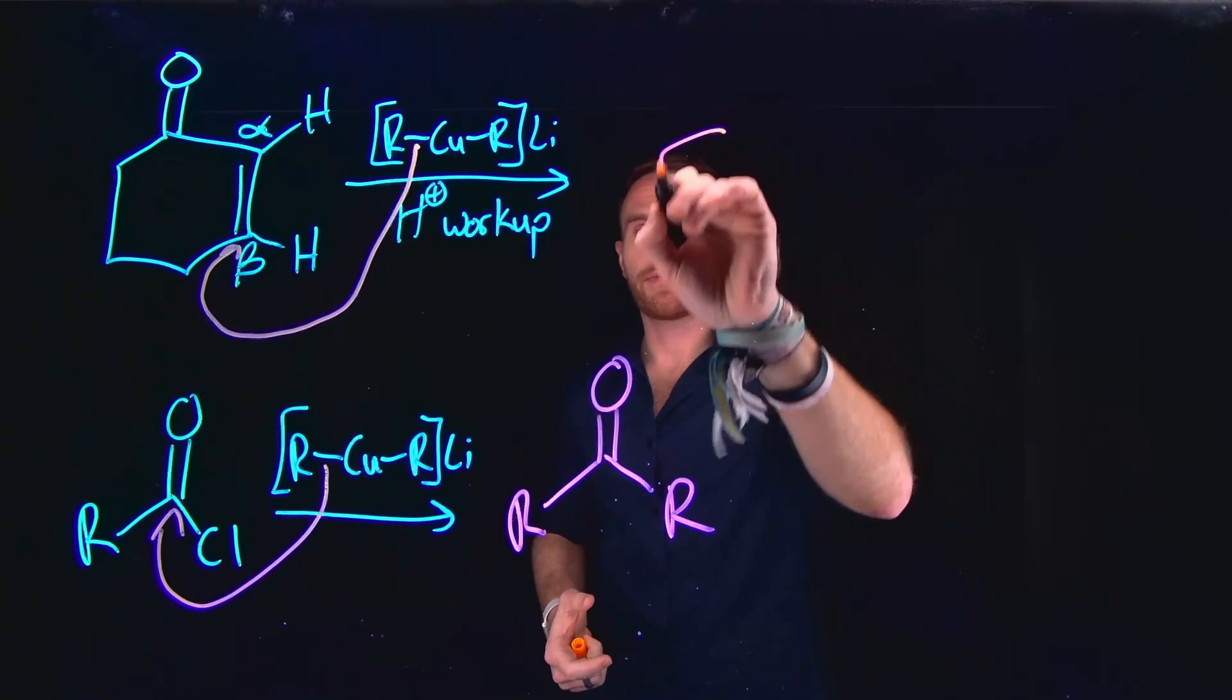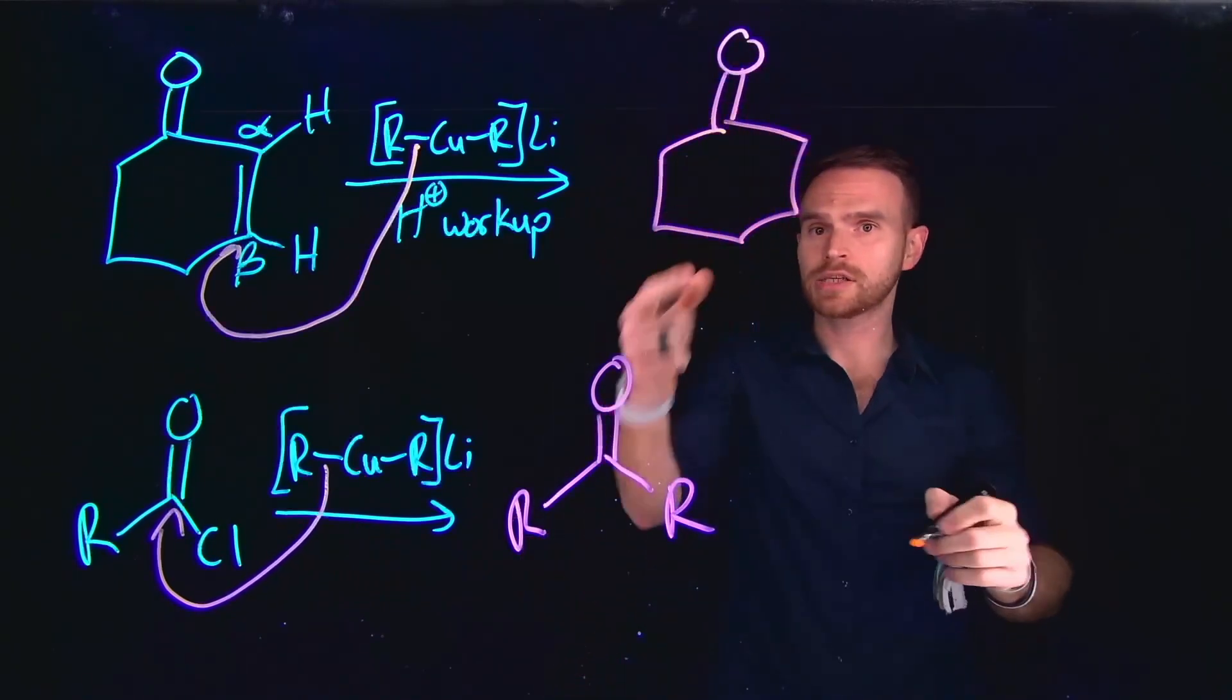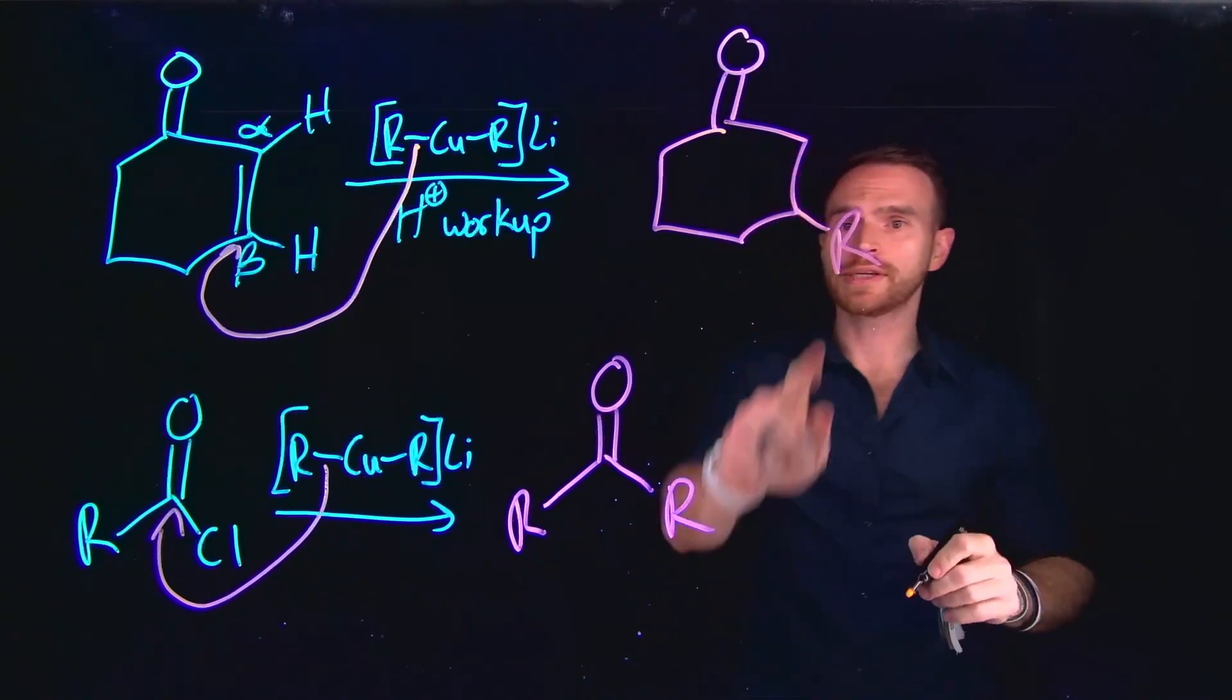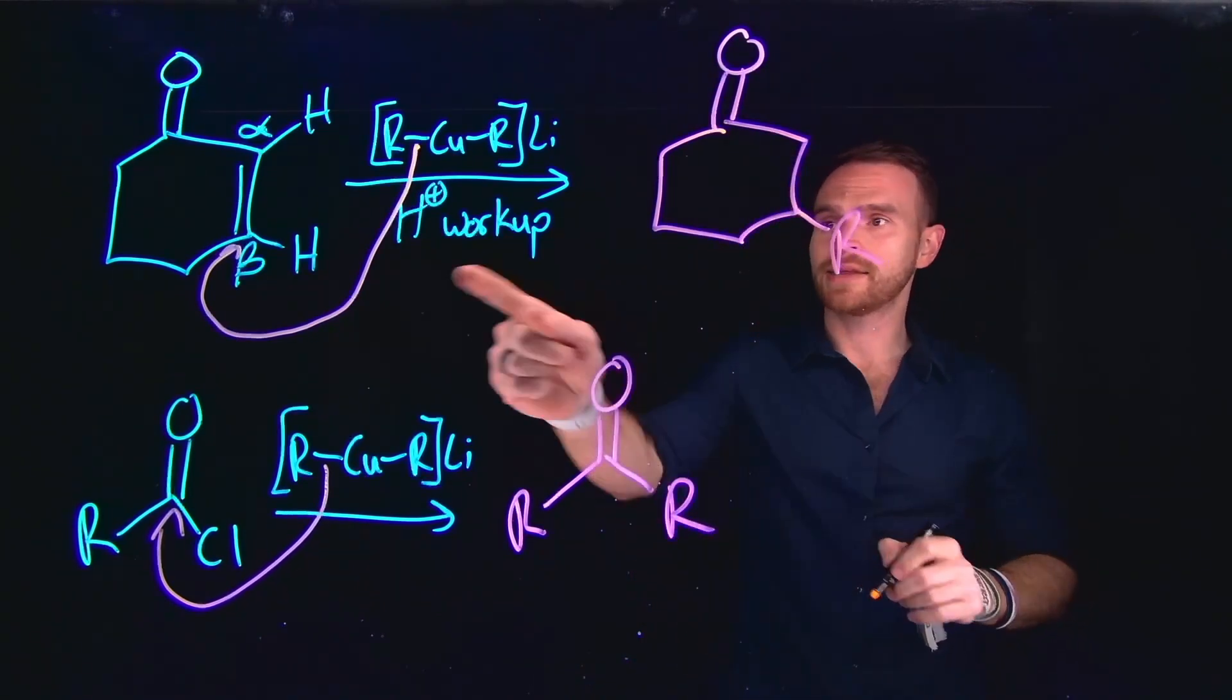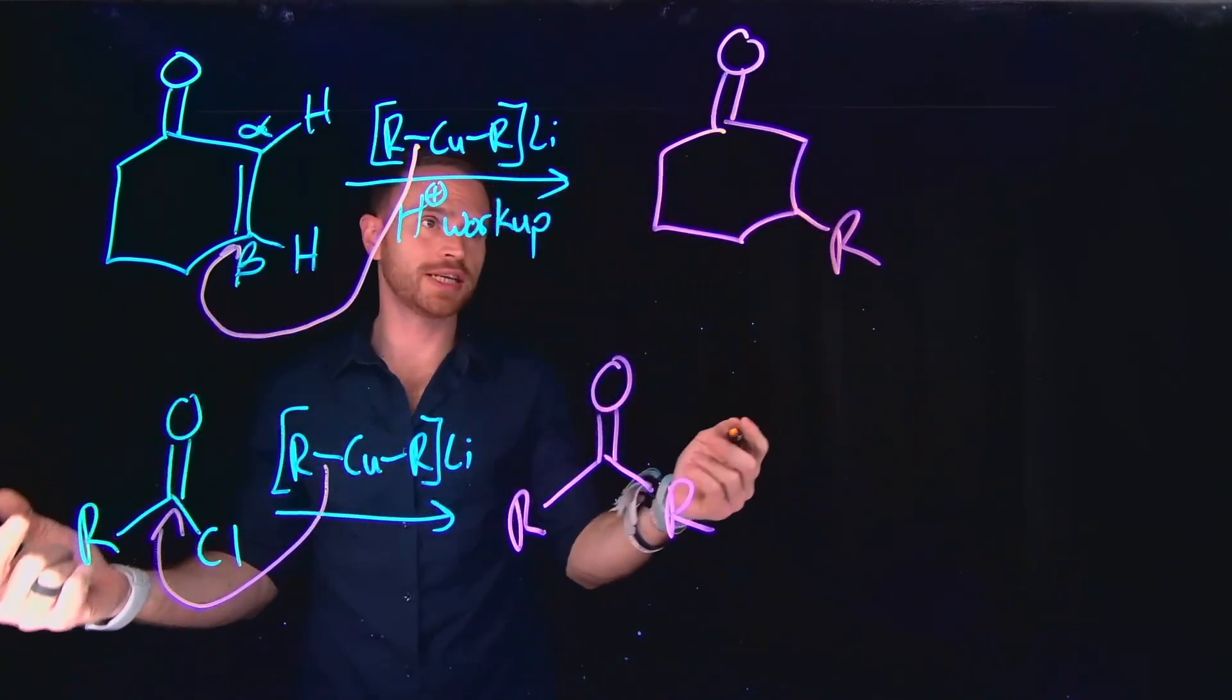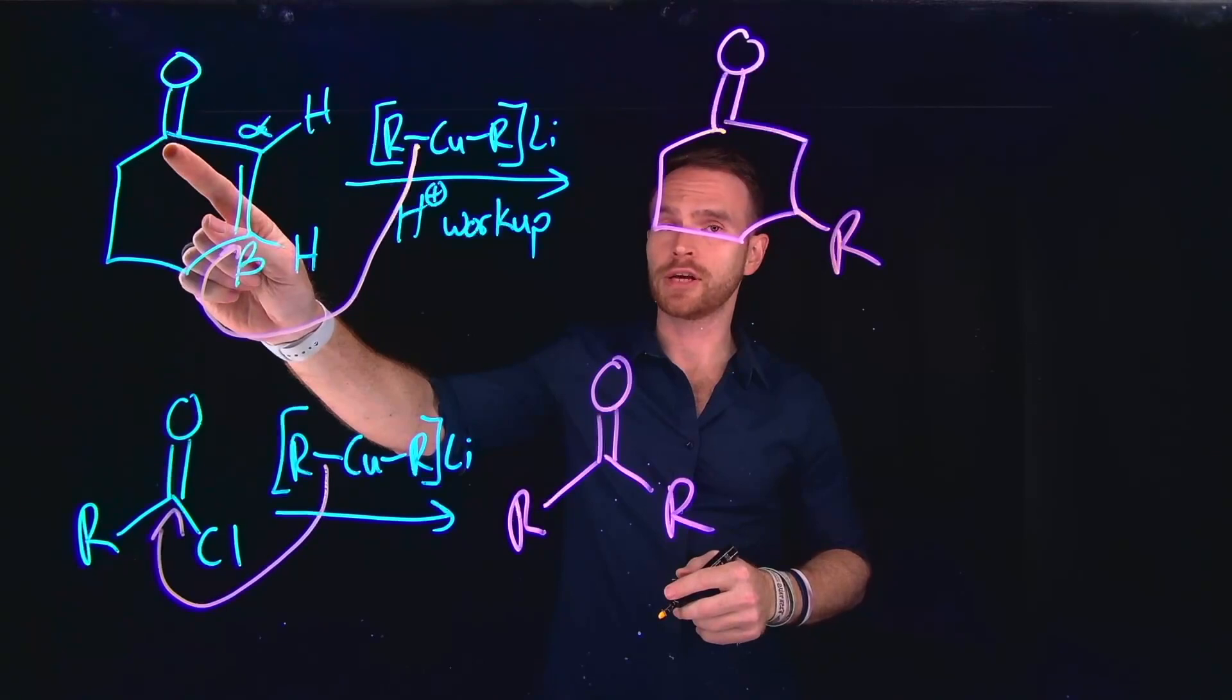And what this would generate following acidic workup would instead leave that ketone unreacted and form our new R bond at this position here. Again, this is following acidic workup. So notice that this is a 1,4 addition instead of addition at the electrophilic carbonyl position.